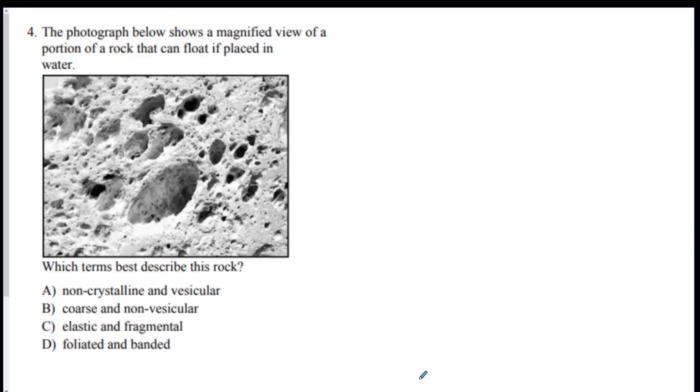Going on. Photograph shows magnified view of a rock that can float if placed in the water. Which term best describes this rock? Looks like holes. We talked about what vocab word means little holes. These are gas pockets. This is an igneous rock. The answer is vesicular. So A is right. No other types of rock have holes. It's only igneous, and it's called vesicular texture.